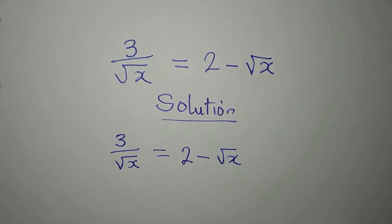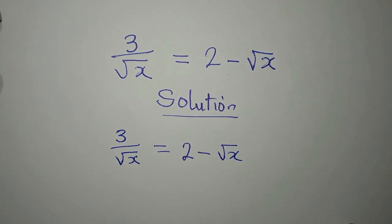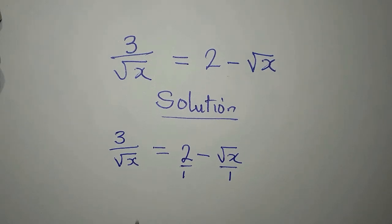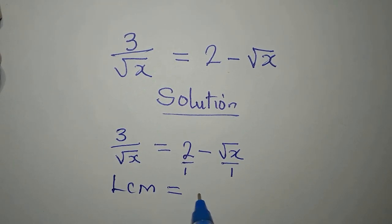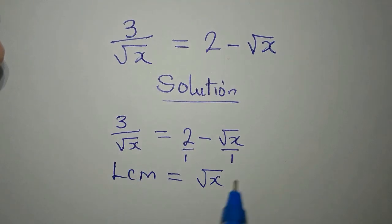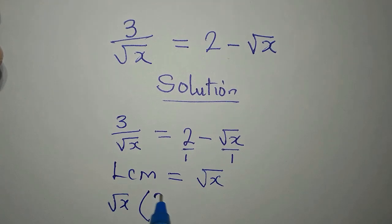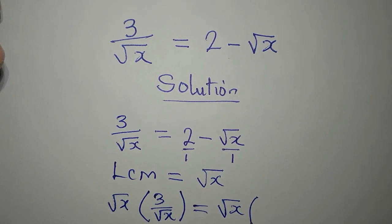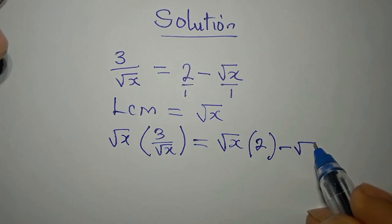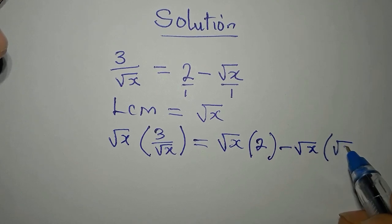How do we deal with this? The first thing we have to do is to get the LCM. We believe that this is over 1 and this is over 1. Now the LCM is equal to square root of x. So to clear out the fractions, we multiply everything by the LCM. So we have square root of x multiplied by 3 over square root of x, equals square root of x multiplied by 2, minus square root of x multiplied by square root of x.